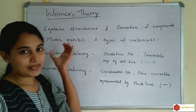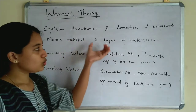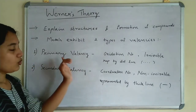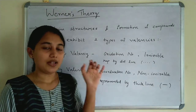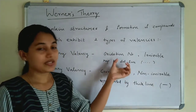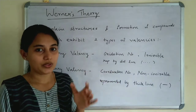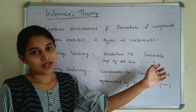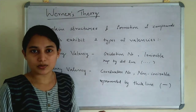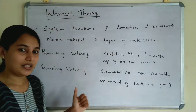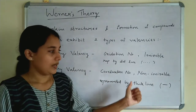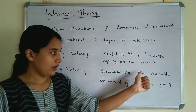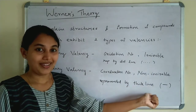Werner's theory postulates that metals exhibit two types of valencies: one is primary valency and another one is secondary valency. Primary valency of a coordination compound denotes the oxidation number. The oxidation number represents primary valency and it is ionisable. Secondary valency represents coordination number and it is non-ionisable. Primary valency is represented by a dotted line and secondary valency is represented by a thick line.